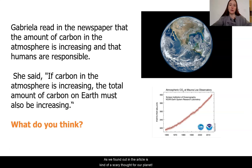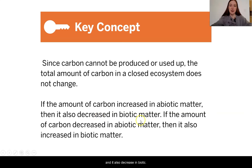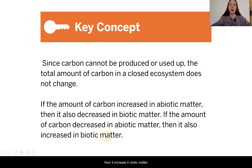Which, as we found out in the article, is kind of a scary thought for our planet. If the amount of carbon increased in abiotic matter, then it also decreased in biotic matter. If the amount of carbon decreased in abiotic matter, then it increased in biotic matter. This second part is what is happening in our biodome.